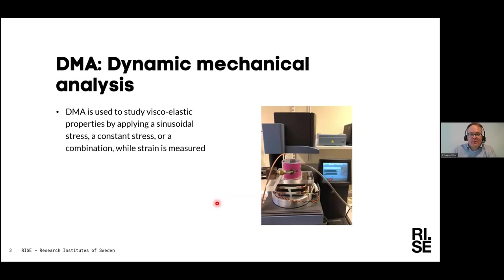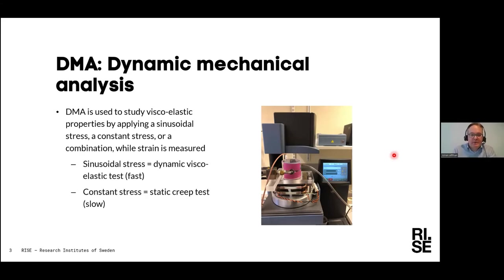In the DMA instrument you can see the load cell. You can apply different types of loading — you always apply a stress, which could be sinusoidal (varying over time), a constant stress, or a combination. In every case you measure the strain response. Sinusoidal stress typically corresponds to dynamic viscoelastic properties, giving fast responses for printing applications. Constant stress is more like a static creep test — a slow process.